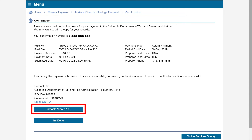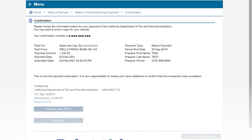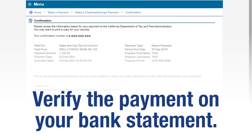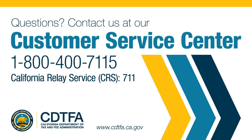If you would like to print this screen for your records, use the printable view button. Once you leave this screen you will not be able to return to it. Also make sure you verify on your bank statement that the payment was successful. If you still have questions, please call our customer service center at 1-800-400-7115, California Relay Service at 711.